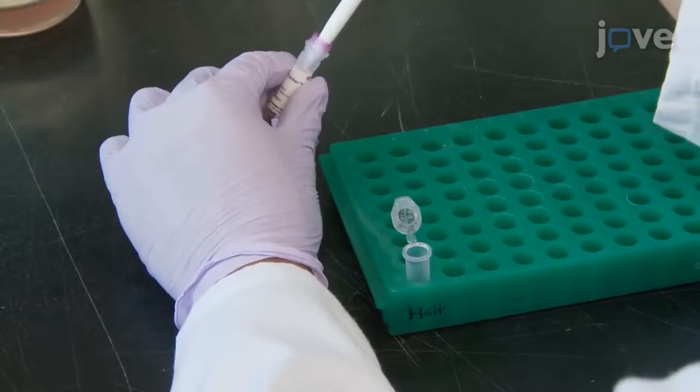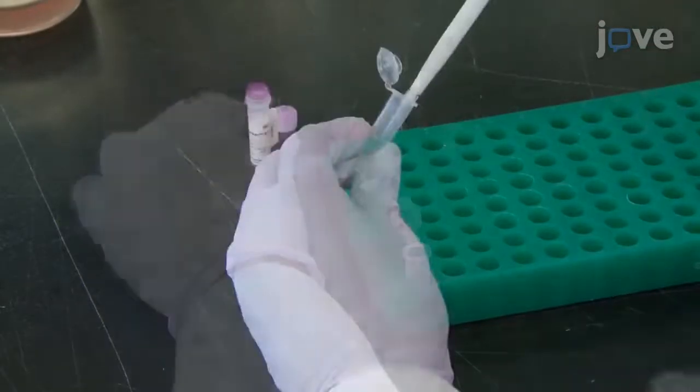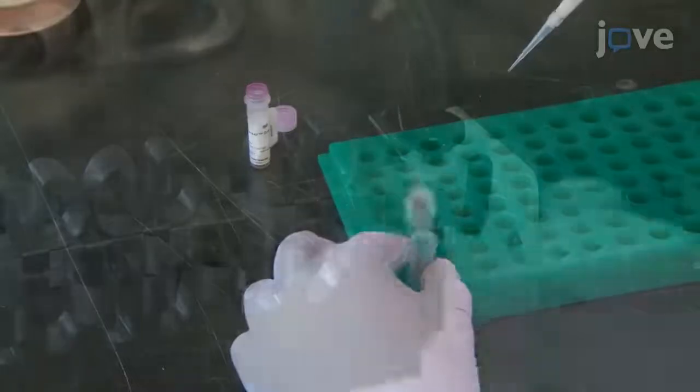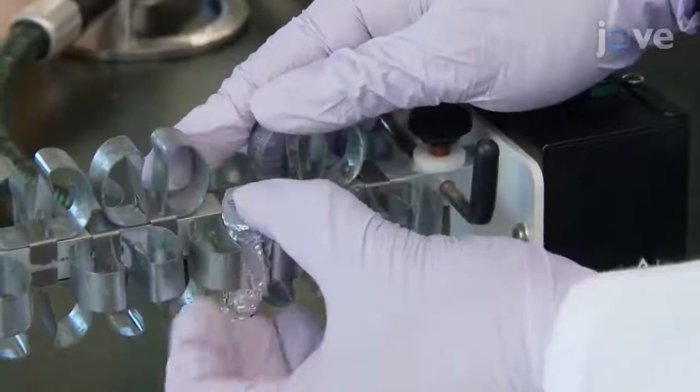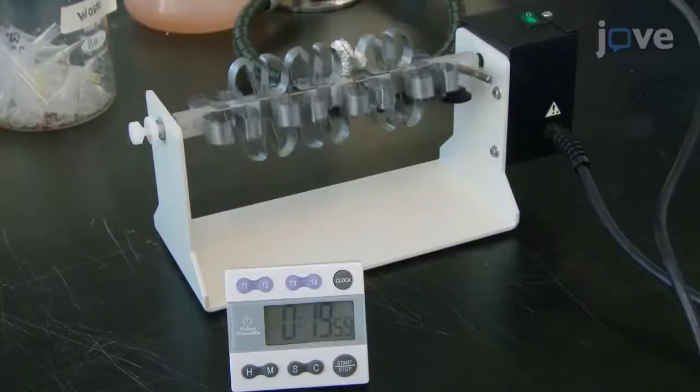Then dilute an appropriate cell tracking dye according to the manufacturer's instructions. Incubate the cell suspension at room temperature for 20 minutes in the dark.